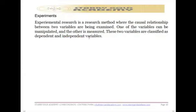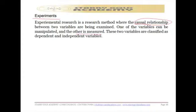Experiment is another source of data and information gathering. In experimental research, this is a kind of research method where the causal relationship between two variables is being examined — we want to know what caused what and what the effect is. One variable is manipulated and the other is measured.